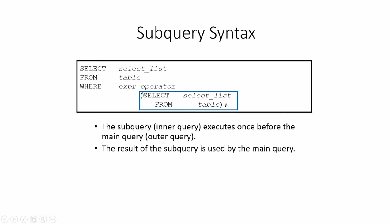In this inner query — which you can call the subquery — we write the query to find the salary of Tatsat. In the outer query, we find all those who are earning more than Tatsat. This inner query executes once before the main (outer) query runs, and the result of the subquery is used by the main query.